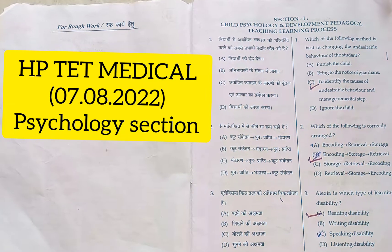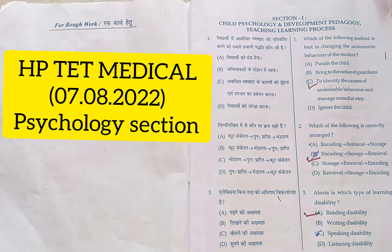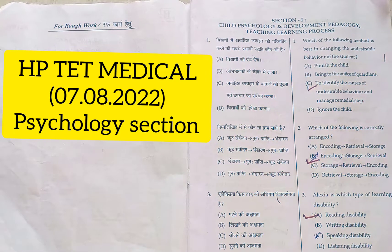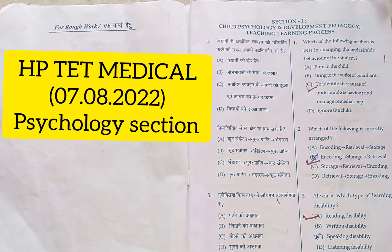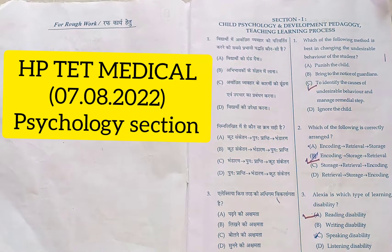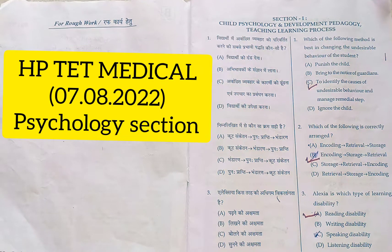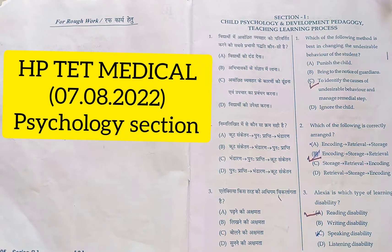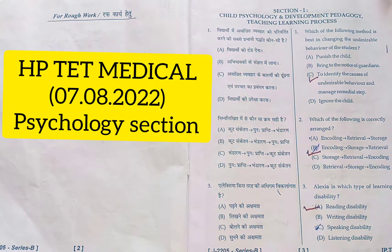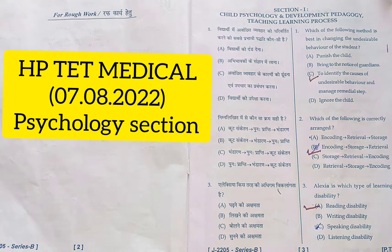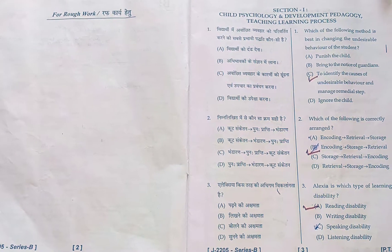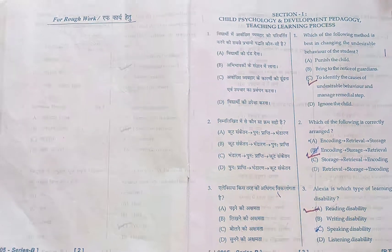First is to identify the cause of undesirable behavior and manage remedial steps. Then next, we will encode, store, and retrieve. Then next, it is dyslexia, related to reading disability.